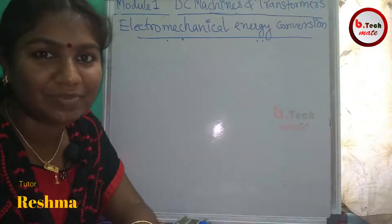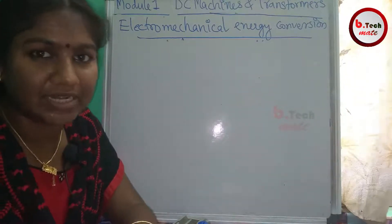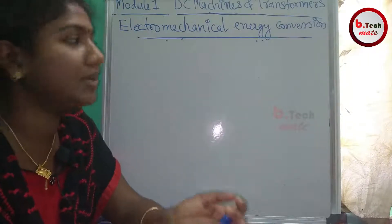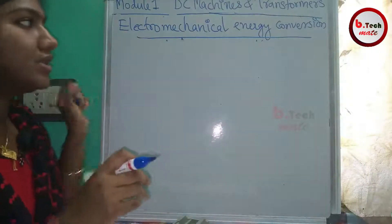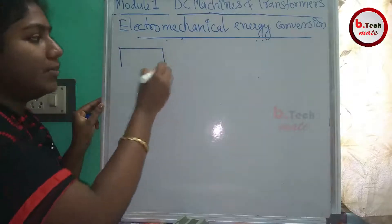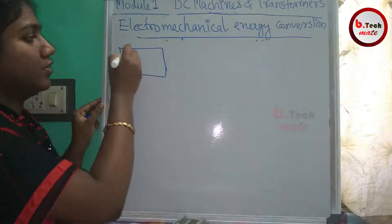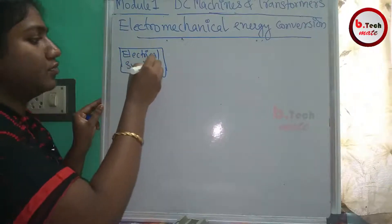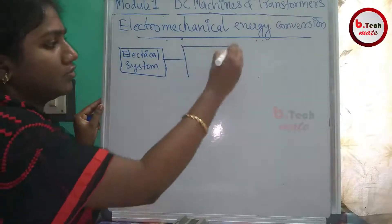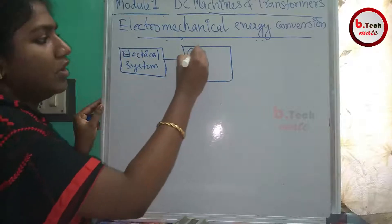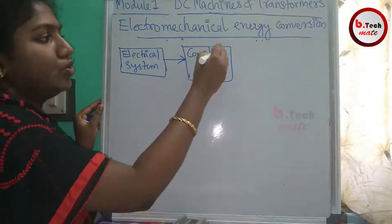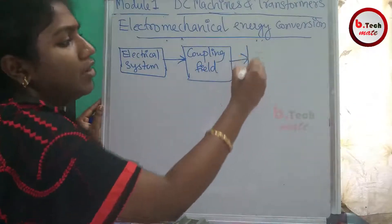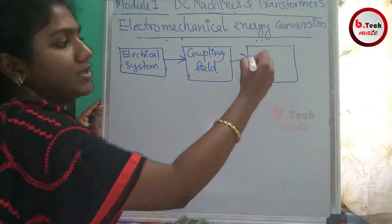The next topic is Electromechanical Energy Conversion. Part B is about Electromechanical Energy Conversion. Let's consider a block diagram. The electrical system is our input, that is our coupling field, and the output is a mechanical system.